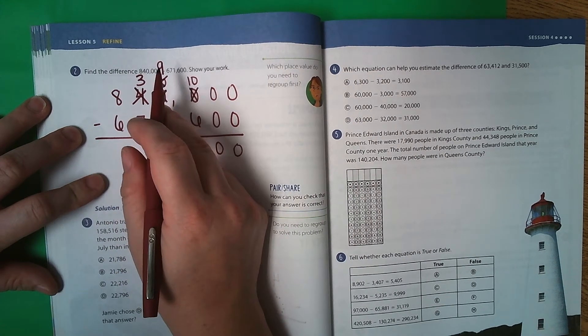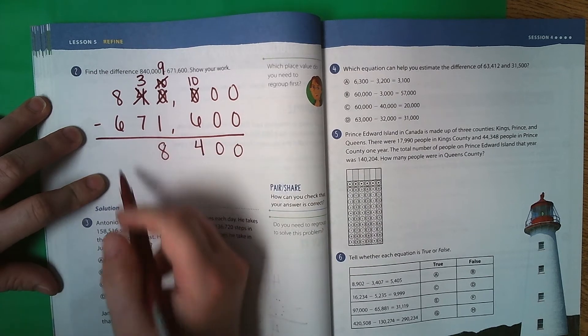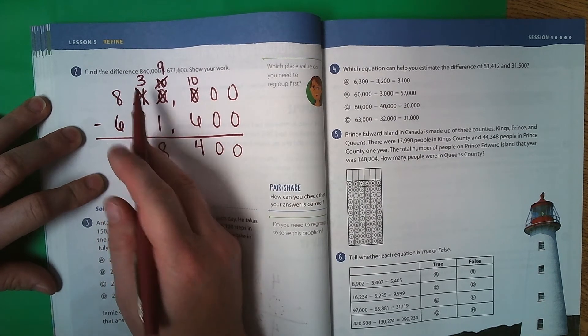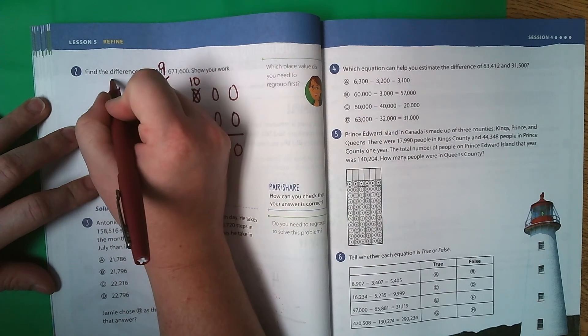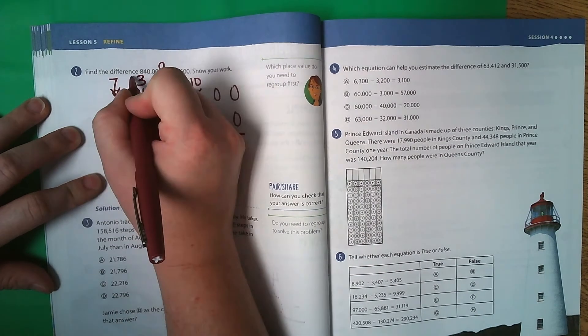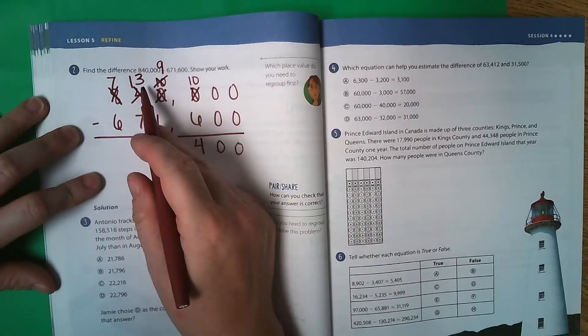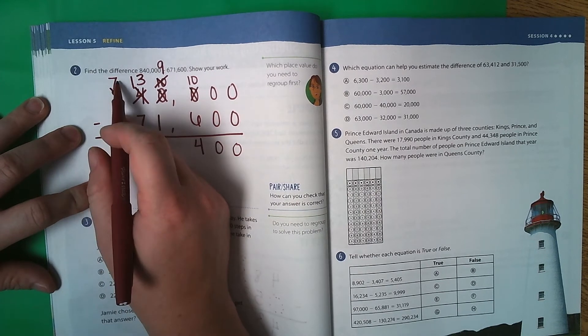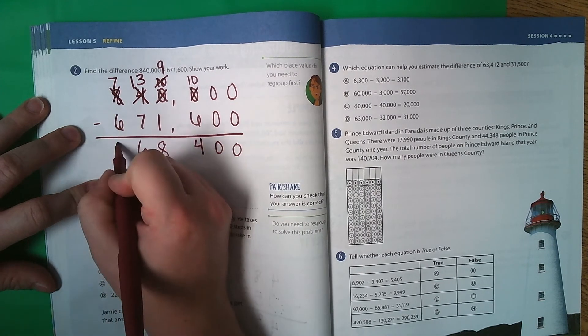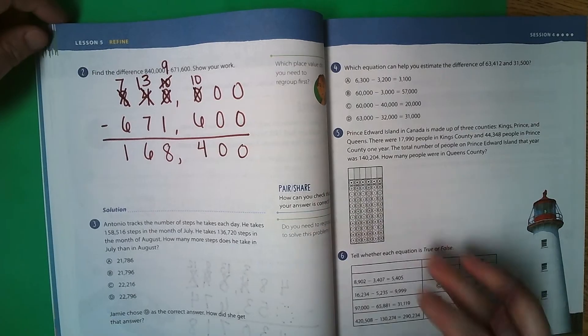So again, I have to regroup, and this becomes a 9. Then this 0 becomes a 10. So 10 minus 6 is 4. Then in the 1,000's column, 9 minus 1 is 8. In the 10,000's, 3 minus 7, I can't do that. So I regroup. 3 becomes 13. 13 minus 7 is 6. And then 7 minus 6 is 1. So our answer is 168,400.